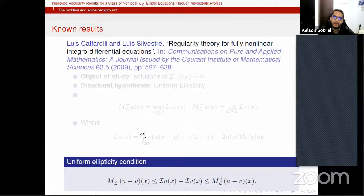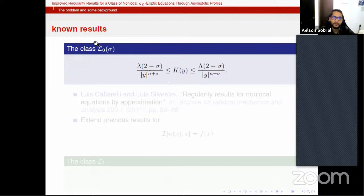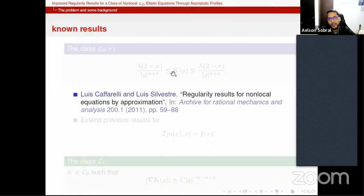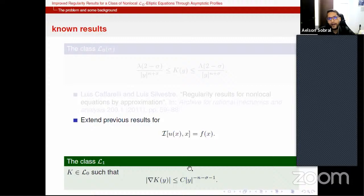And the ellipticity condition, the local ellipticity condition, is this inequality here, provided U and V are regular enough. And in this paper, Caffarelli and Silvestre prove that for this class of kernels, interesting tools are available. For example, comparison principles, Alexander-Bakelman-Pucci estimates, the nonlocal version of it of course, and Harnack inequality, Hölder estimates. And for a subclass of this class L0, they are able to prove C1 alpha. So two years later, the same authors in a paper on ARMA extend their previous results for L0 elliptic equations where the main operator here is L0 with coefficients and a bounded right-hand side.